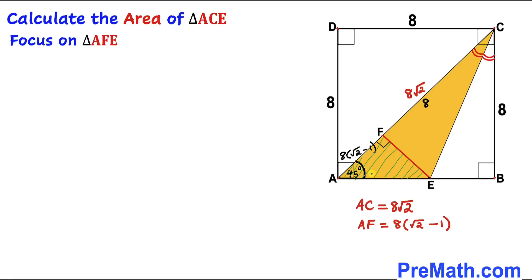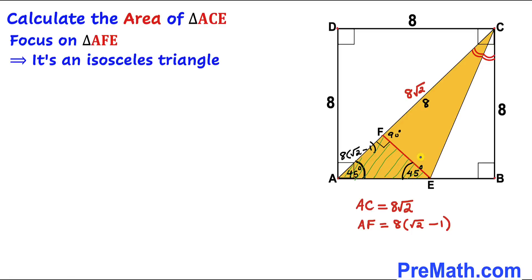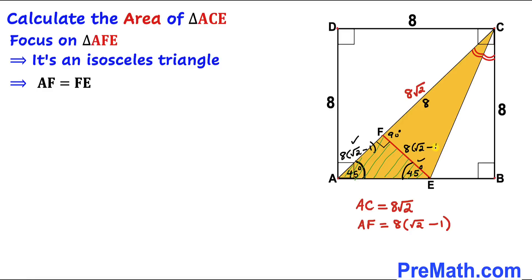Now focusing on small triangle AFE: we know angle F is 90 degrees and angle FAE is 45 degrees. Since the angles must sum to 180 degrees, angle FEA must also be 45 degrees. Therefore triangle AFE is isosceles, and since these two angles are equal, sides AF and FE are equal. So FE = 8(√2 − 1) as well.